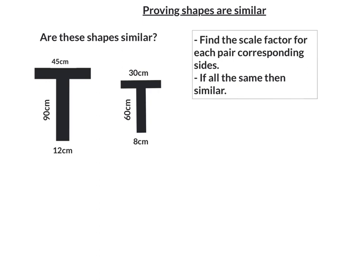In this video, we're going to prove if shapes are similar or not. Now, for shapes to be similar, the scale factor between corresponding sides must all be the same. So we're going to need to find the scale factor for each pair of corresponding sides, and then we can check.